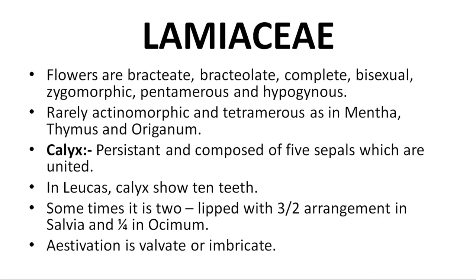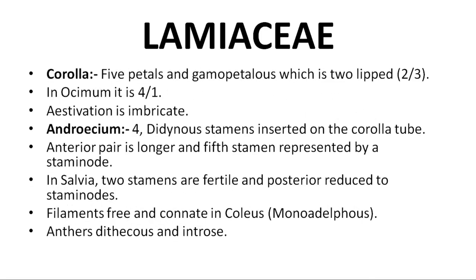Calyx is persistent and composed of five united sepals; the tube has 10 teeth. Sometimes arranged 3+2; in Salvia it is 1+4; in Ocimum it is 3+2. Aestivation is valvate or imbricate. Corolla is tubular, gamopetalous, with 5 petals; in Ocimum the arrangement is 4+1. Aestivation is imbricate.